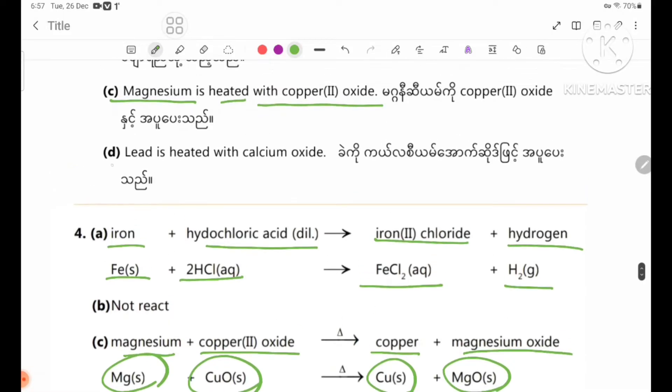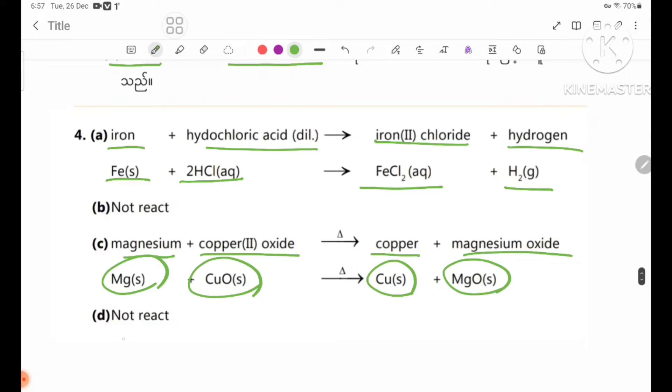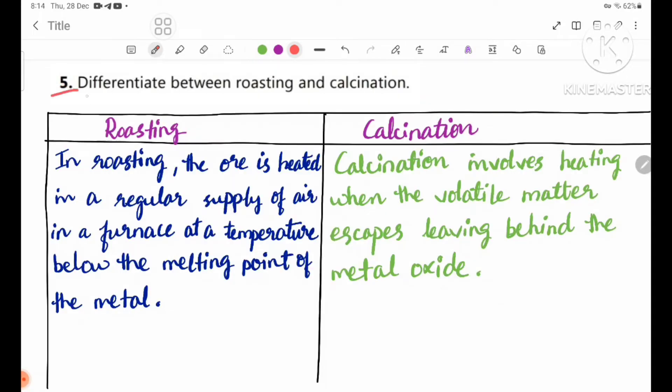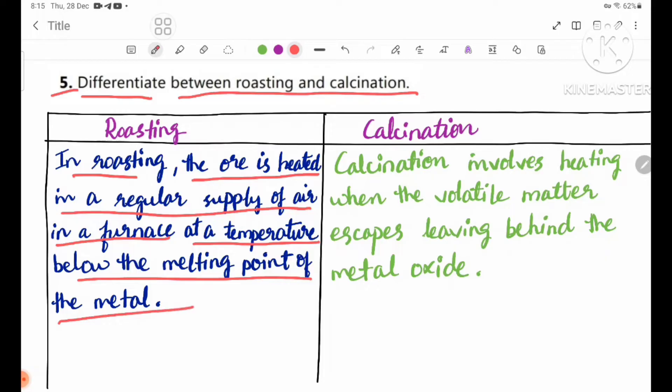Number D is lead with calcium oxide. Number five: Differentiate between roasting and calcination. In roasting, the ore is heated in a regular supply of air in a furnace at a temperature below the melting point of the metal.